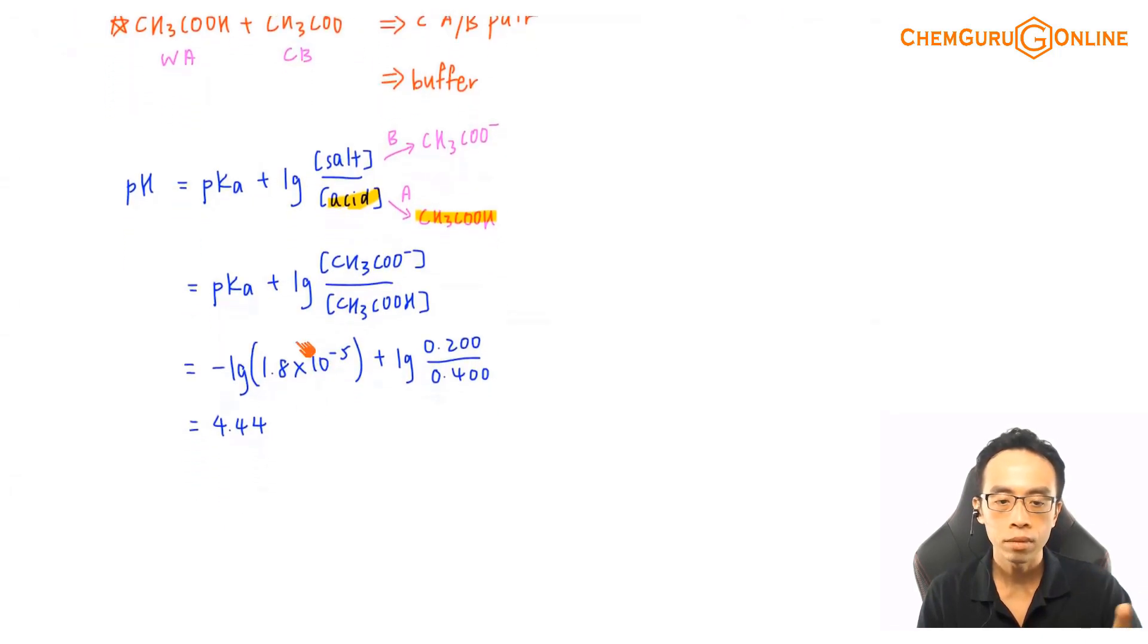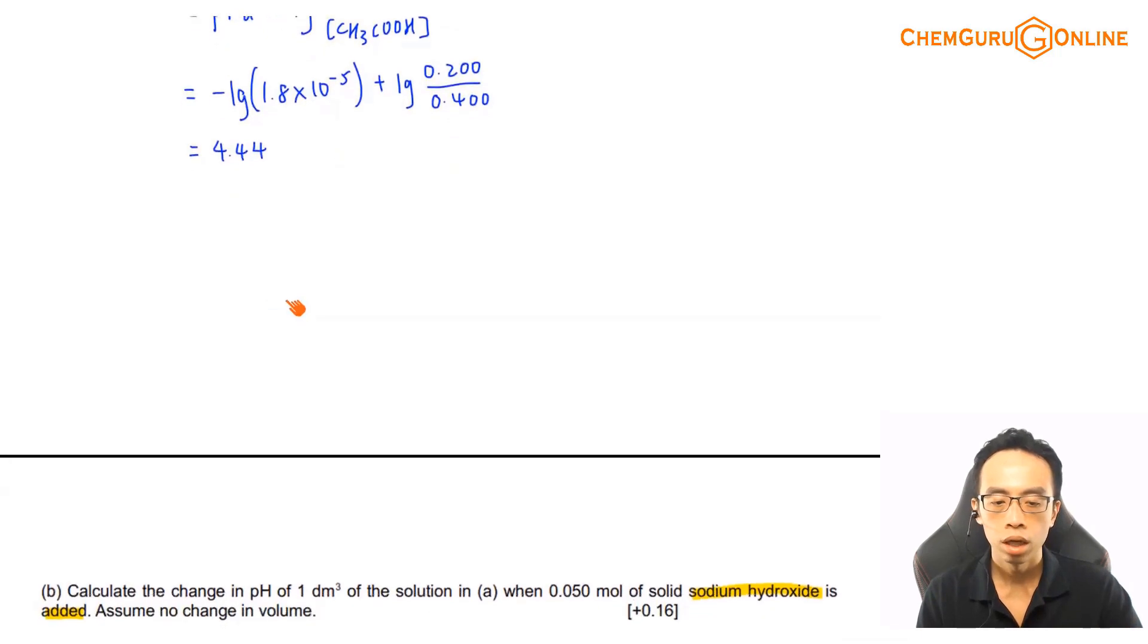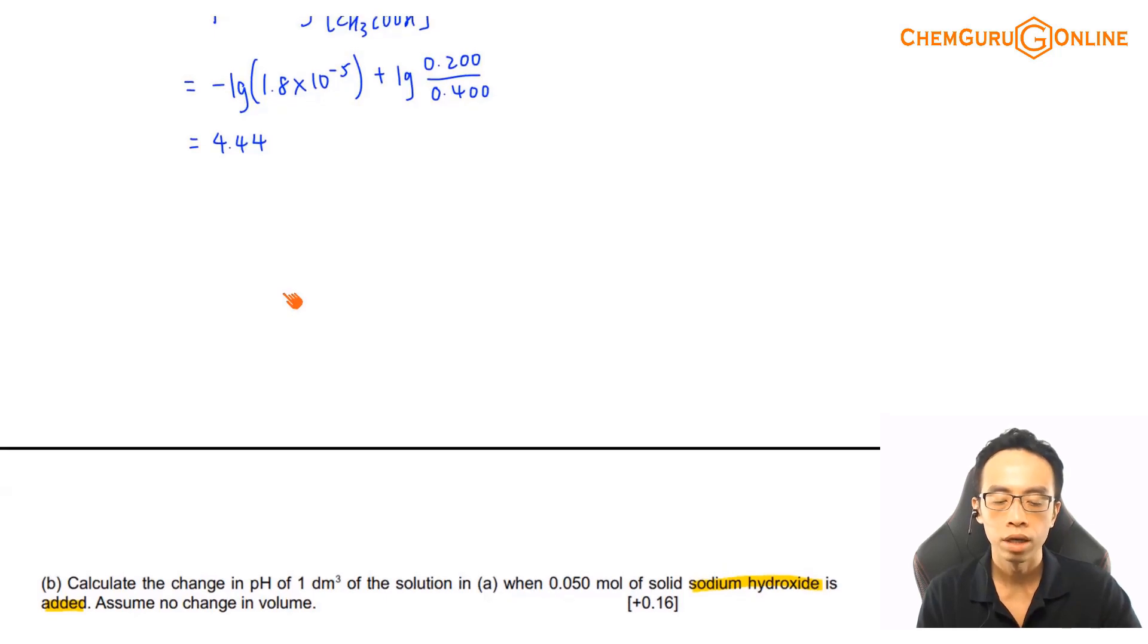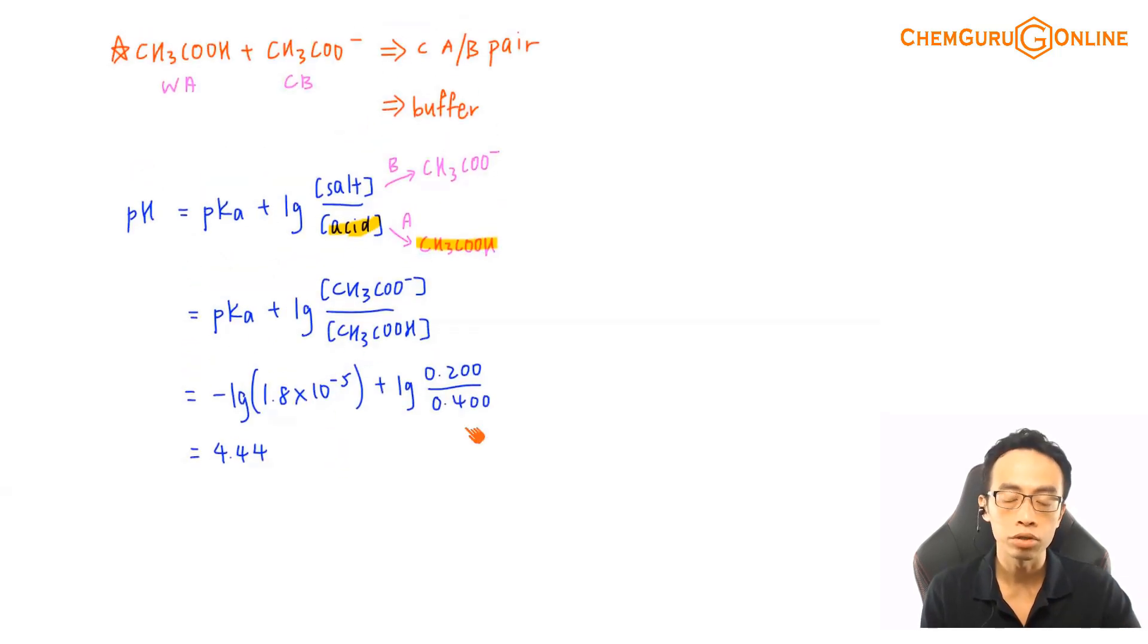B is interesting, because involving B, we want to determine the pH or the change in pH when you're adding 0.05 mol of sodium hydroxide to a buffer. Now this is where some of us will be a bit confused. If this is a buffer, then of course I can calculate the pH of the buffer solution. When I add sodium hydroxide to a buffer, how do I determine the pH when you have a base added to a buffer?